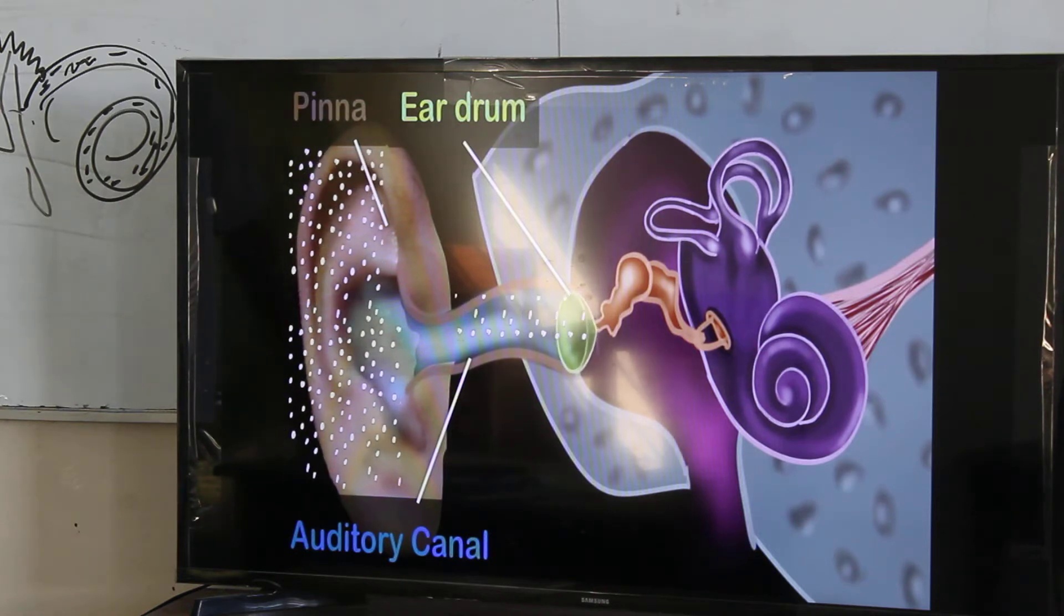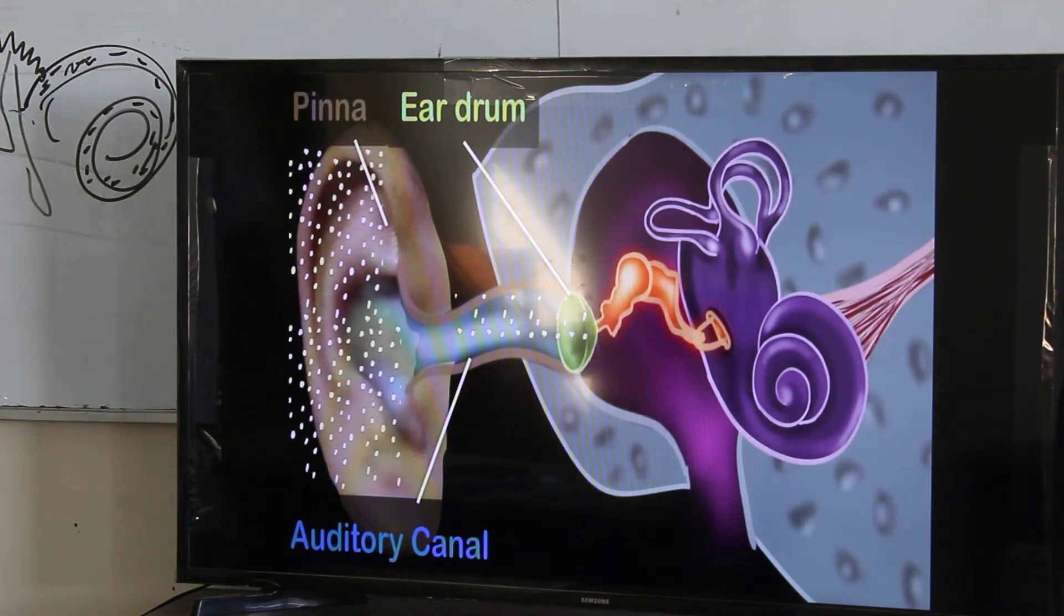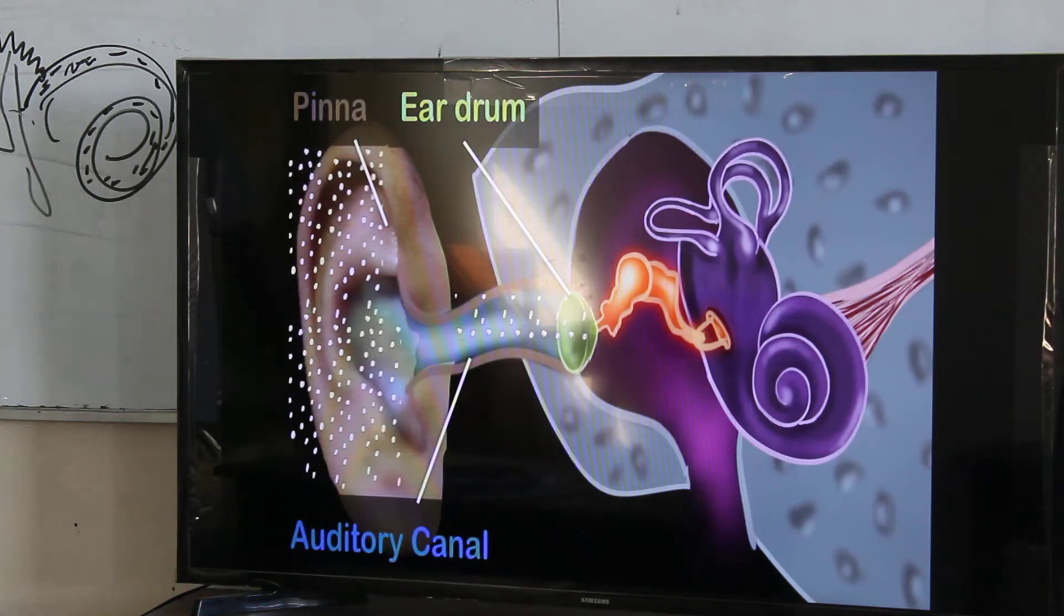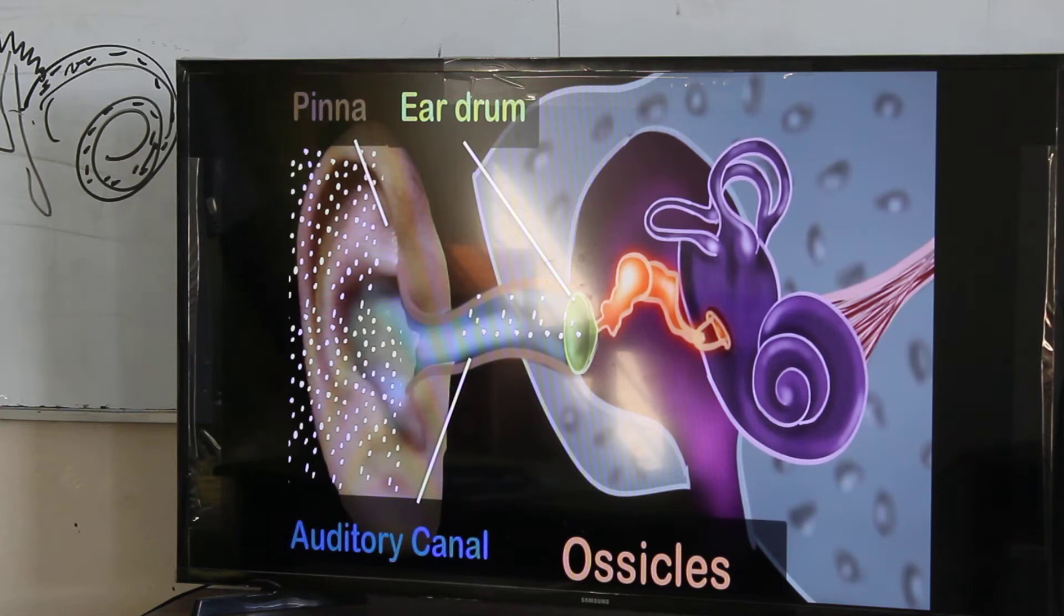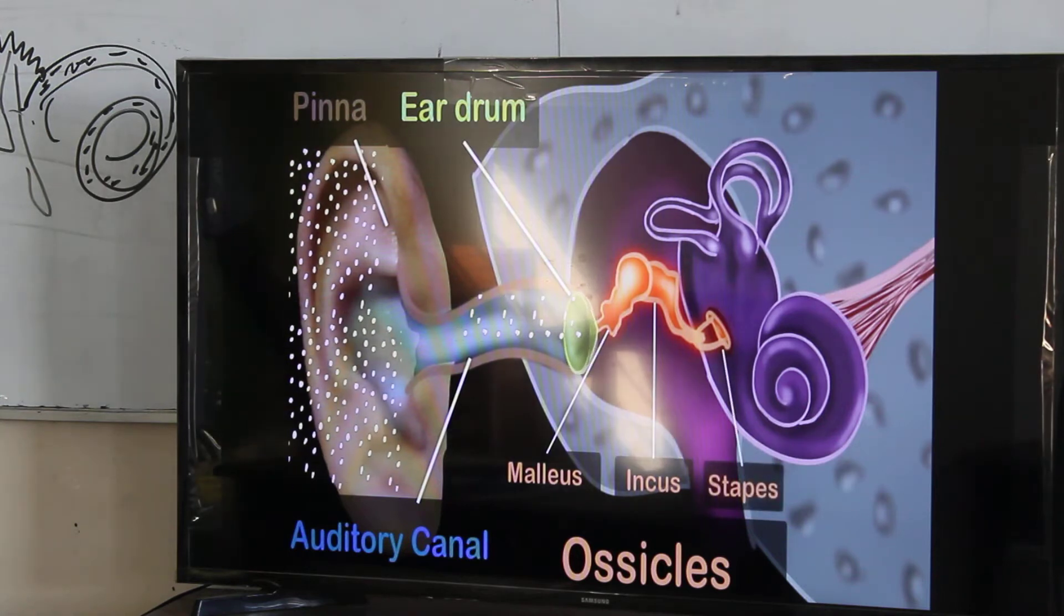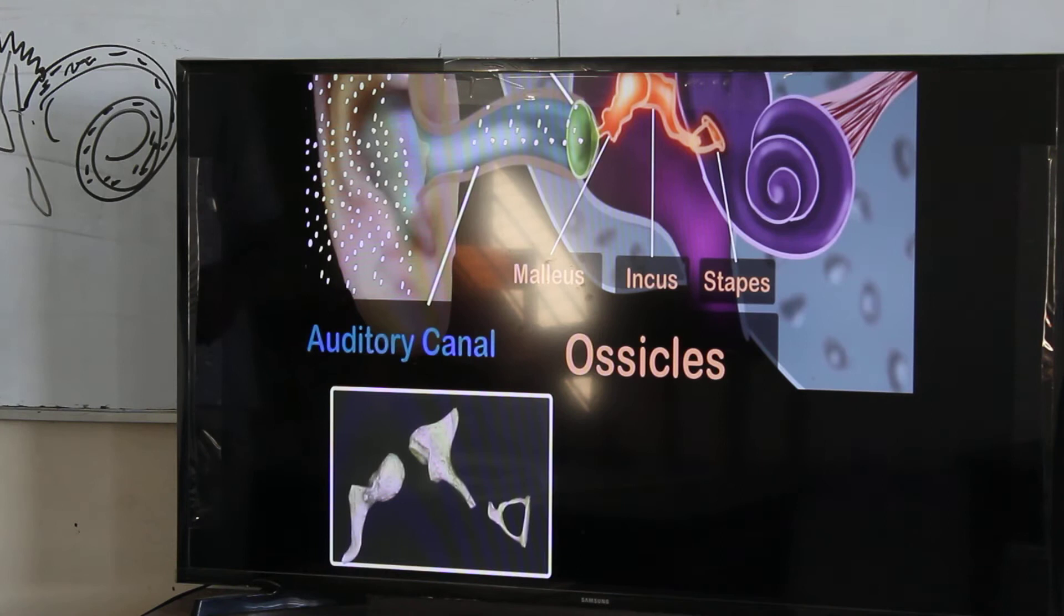This brings us to the middle ear. The middle ear consists of the three tiniest bones of the human body. And they are together called the Ossicles. And they have pretty cool names. They are called the Malleus, the Incus and Stapes. And here is the actual picture of these three bones.